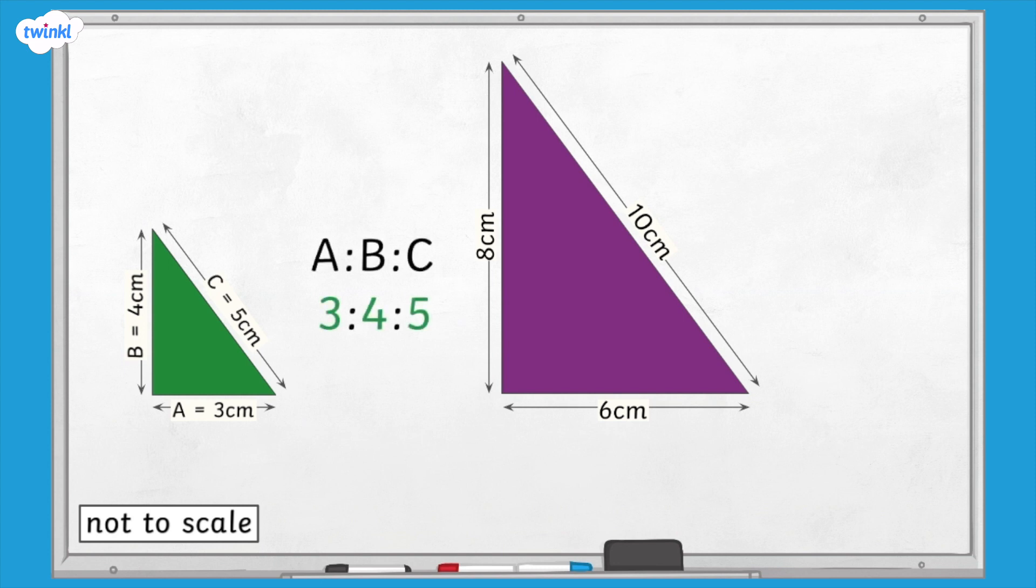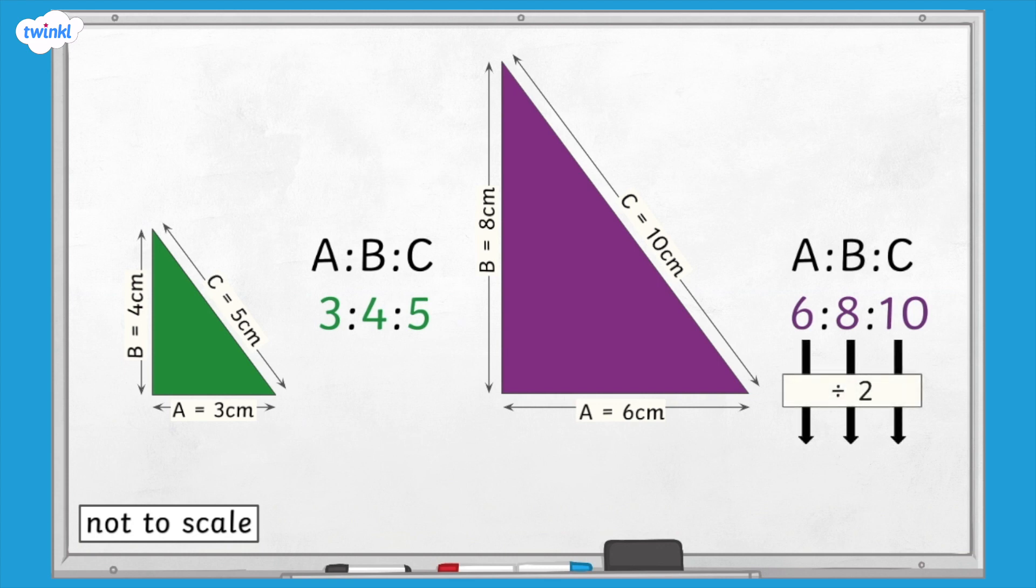We can write this as the ratio 3 to 4 to 5. On the purple triangle, side A is 6 centimeters, side B is 8 centimeters, and side C is 10 centimeters. We can write this as the ratio 6 to 8 to 10, but we can use our knowledge of ratio to simplify this ratio because all of the numbers in it can be divided by 2. This means the ratio becomes 3 to 4 to 5.